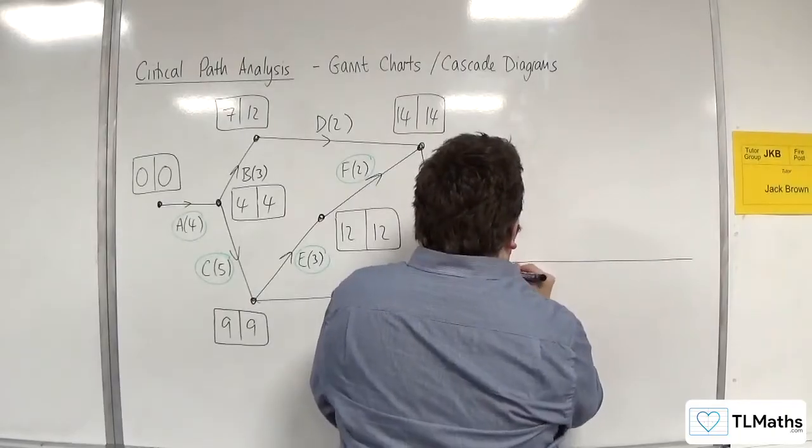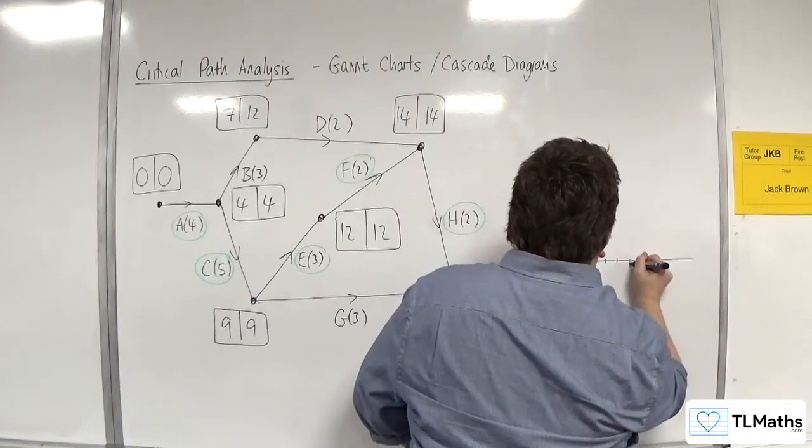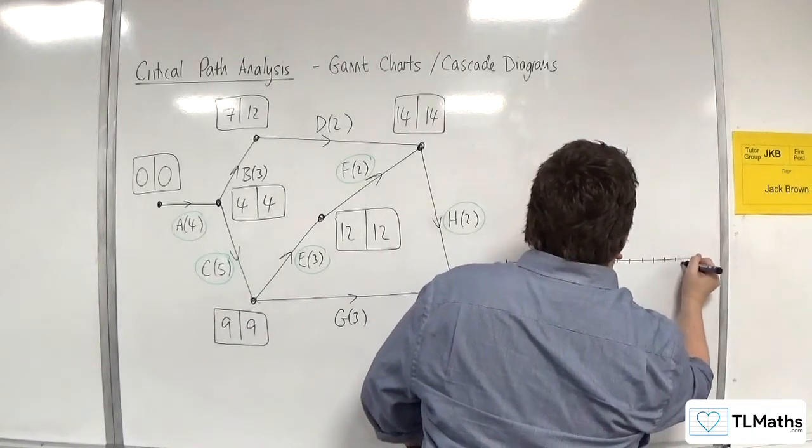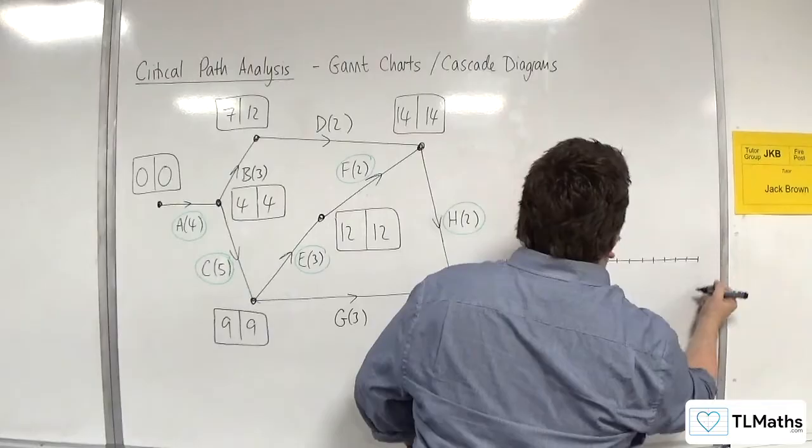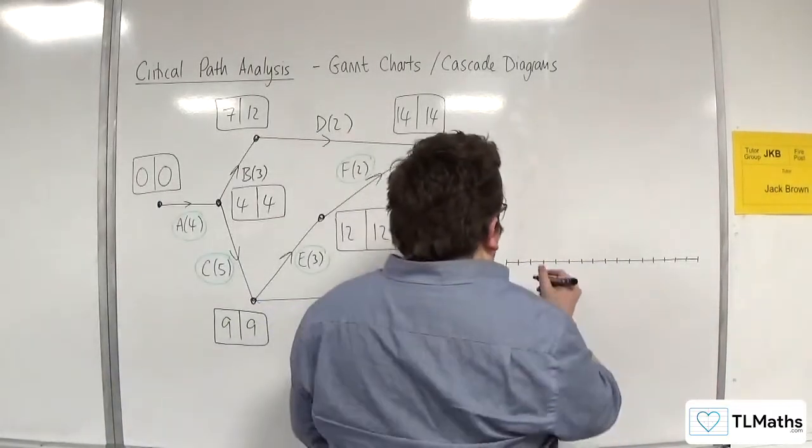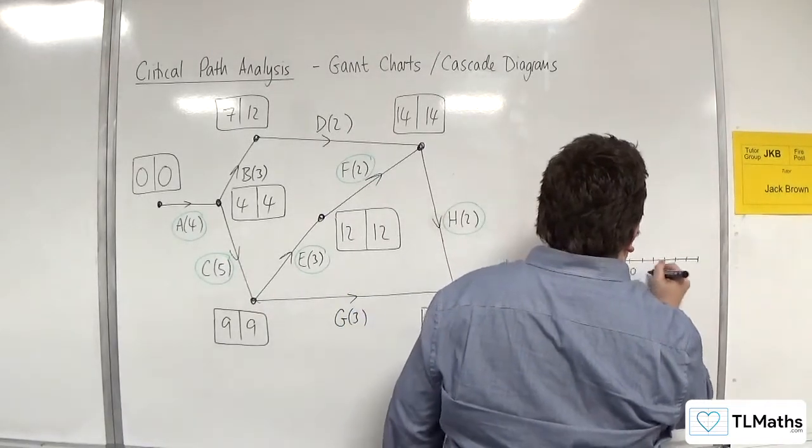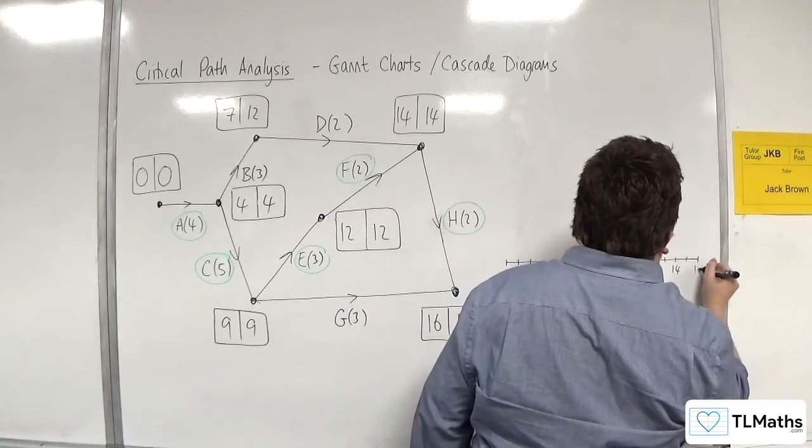So here's 0, 1, 2, 3, 4, 5, 6, 7, 8, 9, 10, 11, 12, 13, 14, 15, 16. Almost got there. So 2, 4, 6, 8, 10, 12, 14, 16.